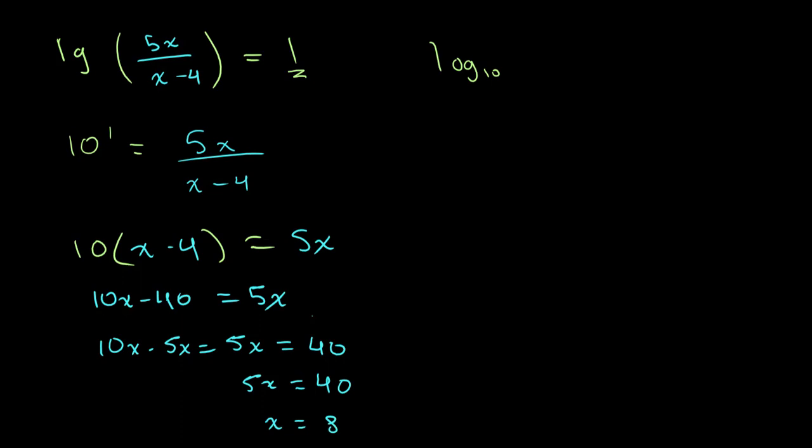Let's look at another example. Let's say that we have 2 times log base 4 of x. And we're subtracting log base 4 of x plus 3 from this. And this expression is also equal to 1. So once again, what we need to do is we need to look for the different laws that we can apply. So we see over here, since we're subtracting, and these both are the same base, that we can apply the division law.